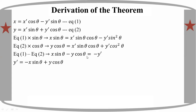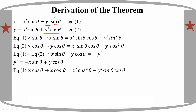1 prime is equal to minus 4 minus 8 sin theta plus 1 cos. 1 prime is equal to minus 8 sin theta plus 1 cos. 1 prime is equal to minus 2 times 1 prime. 1 prime is equal to minus 1 prime minus 2.